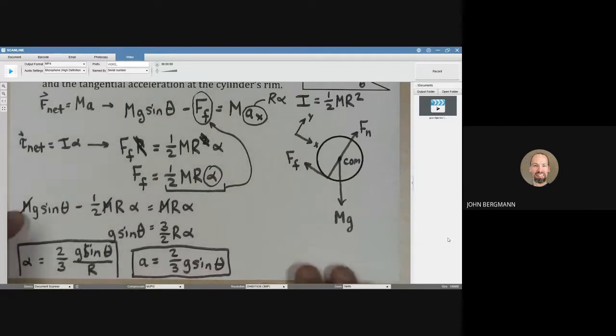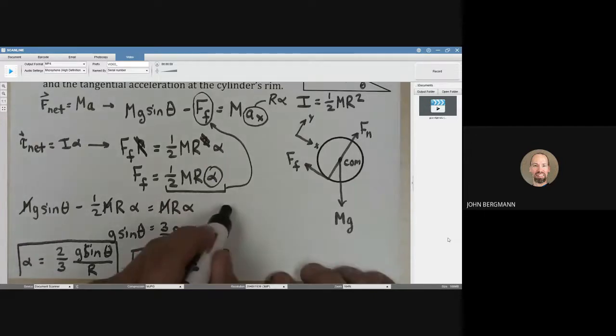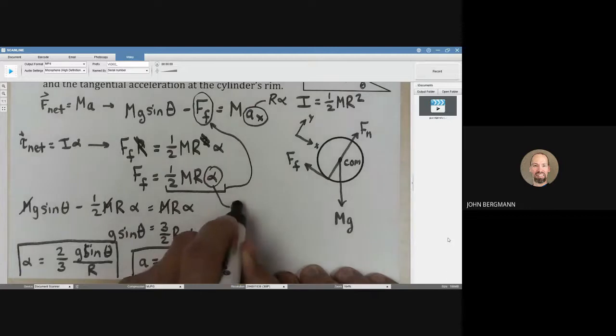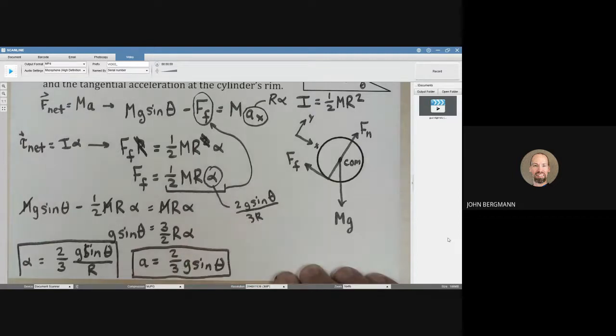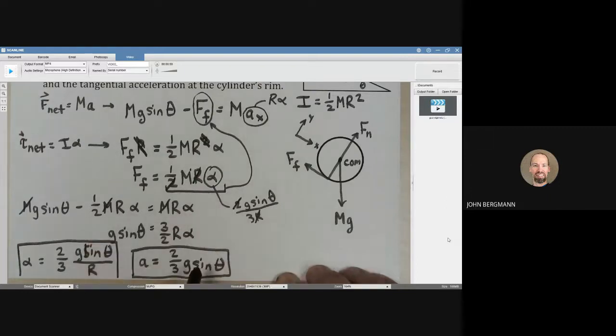Lastly, we need to find the force of friction. There's the equation for the force of friction right there. We need to put our expression for alpha in there: two g sine theta over three r. What does that give us? The r cancels, the two cancels, so I'm seeing one-third mg sine theta.